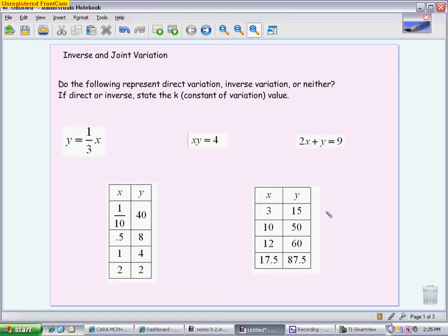First thing we're going to look at is looking at different either equations or tables of values and figuring out what type of variation do we have. Is it direct, is it inverse, or is it neither? If it is direct or inverse, then we need to figure out what that constant of variation, which we refer to as the k value, is.